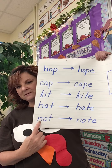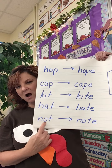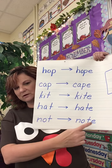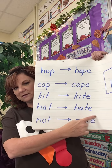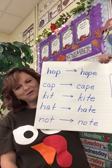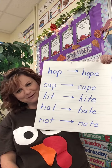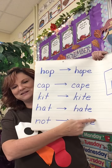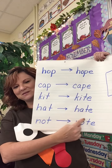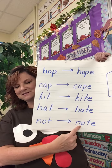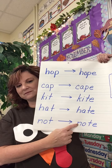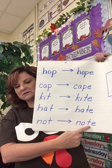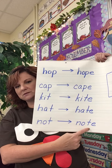All right, ready? N-O-T, not. That silent E — I keep calling it a transformer E — jumps over the T and tells the O to say the long 'O' sound. So now we have N-O-T-E, note.